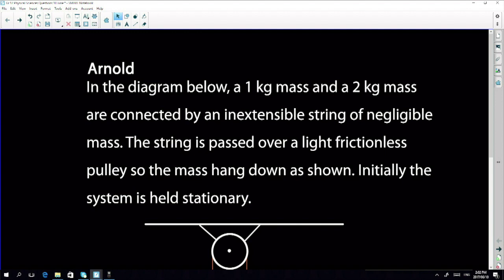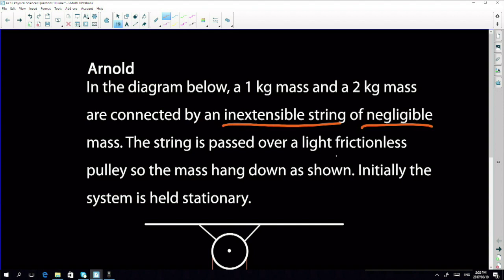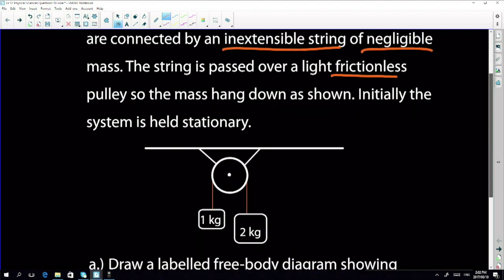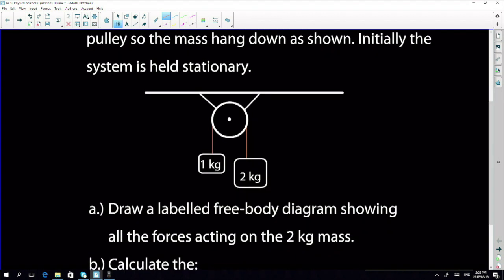This is our diagram and it's unusual because they don't often ask ones like this, but it's a really nice one. It says: In the diagram below, a one kilogram mass and a two kilogram mass are connected by an inextensible string. This simply means that it doesn't stretch, so the string is going to stay whatever length it is. The string is of negligible mass - we can ignore the mass - and is passed over a light frictionless pulley. The mass hang down as shown. Initially this system is stationary.